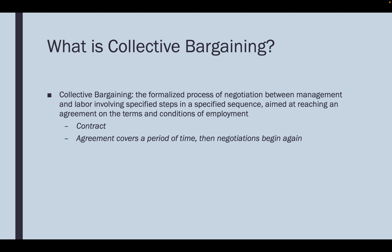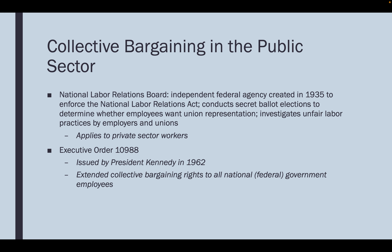Then negotiations begin again. Negotiations usually begin in the final year of a contract, so labor and management will put together their teams during the final year and start the collective bargaining process. Collective bargaining agreements include things like wages and working conditions, but also a lot of processes — disciplinary processes. It spells out the rights of management and the rights of labor, and these things are negotiated, so neither side gets everything they want.